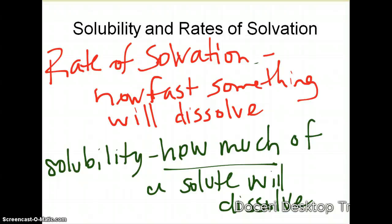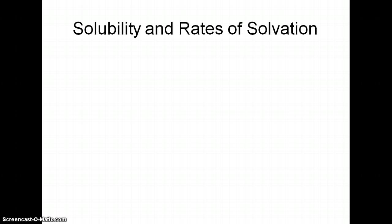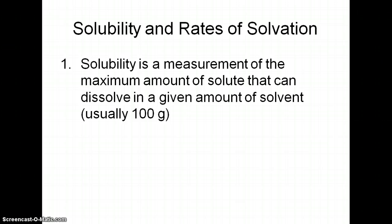Think about iced tea: solubility is how much sugar you can put in your tea before you end up with sugar on the bottom of your glass, whereas the rate of solvation is how fast that sugar dissolves. Solubility is the measurement of the maximum amount of solute that you can dissolve in a given amount of solvent — normally we look at about 100 grams of water. If you have more water, you can dissolve more of a substance.